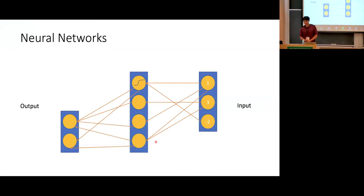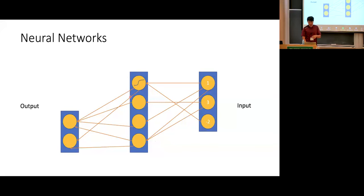Maybe just for the two or three people who raised hands, I'm going to quickly review what a neural network is. This is a pretty typical pictorial representation of a neural network. You have a bunch of neurons and a bunch of layers. Each loose slice is what's called a layer; the one in the middle is called the hidden layer, and then there's the input and output layers.